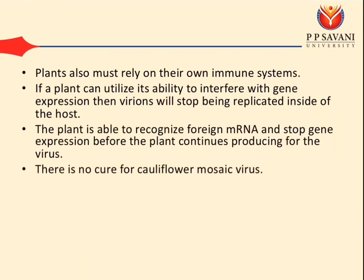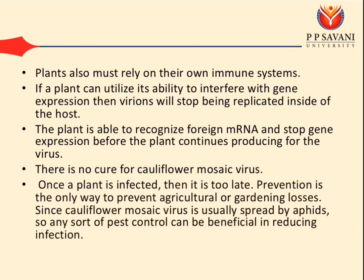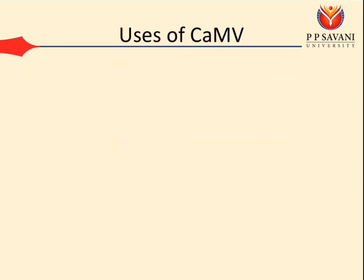There is no cure for Cauliflower Mosaic Virus. Once a plant is infected, it is too late. Prevention is the only way to prevent agricultural or gardening losses. Since CaMV is usually spread by aphids, any sort of pest control can be beneficial in reducing infection.